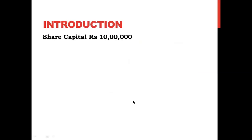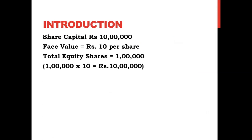Consider share capital is 10 lakhs. When Boss Baby started the company, the promoters decided they would require a minimum share capital of 10 lakh rupees. They decided the face value per share would be 10 rupees. So total equity shares issued were 1 lakh — that is 10 lakh divided by 10 rupees per share. So 1 lakh shares into 10 rupees per share gives capital of 10 lakh rupees. How many equity shares were going to be issued by Boss Baby's company? 1 lakh equity shares.